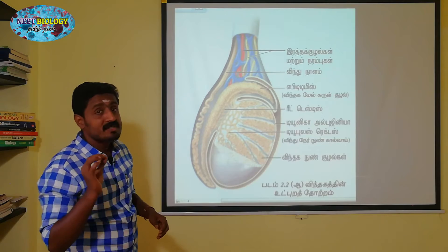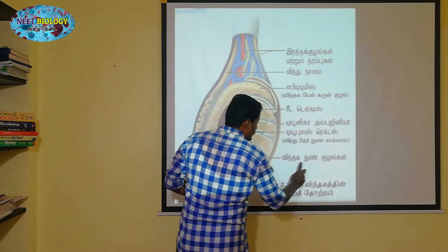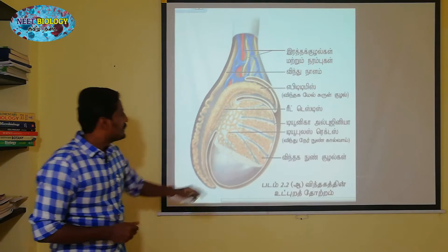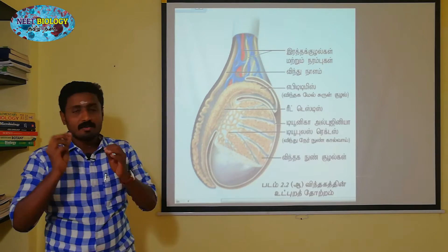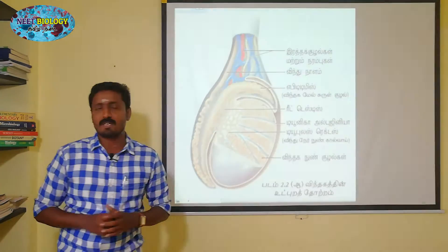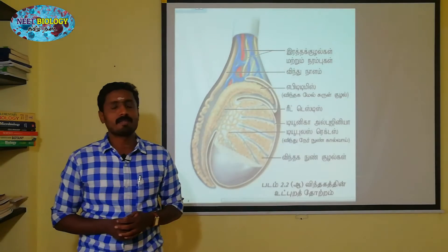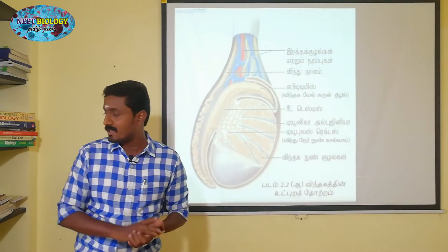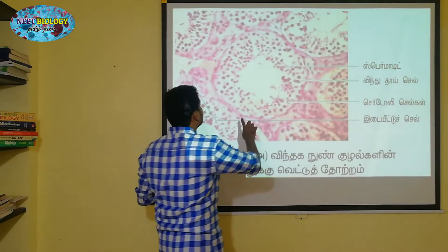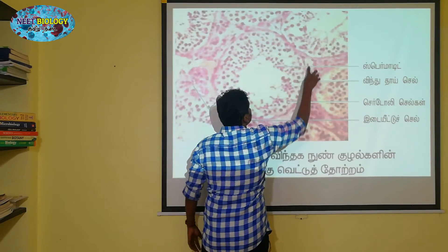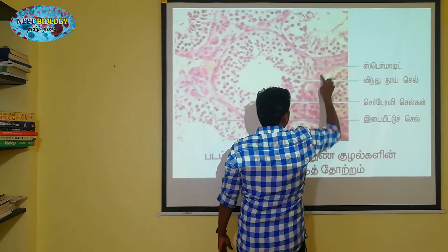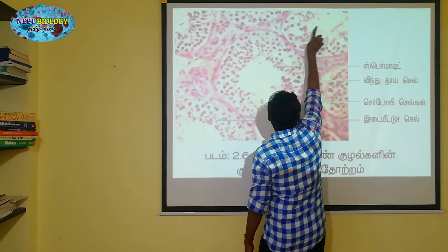What are Seminiferous Tubules? Sperms are developed from Seminiferous Tubules. Seminiferous Tubules, seen in cross-section, appear as multiple tubes.